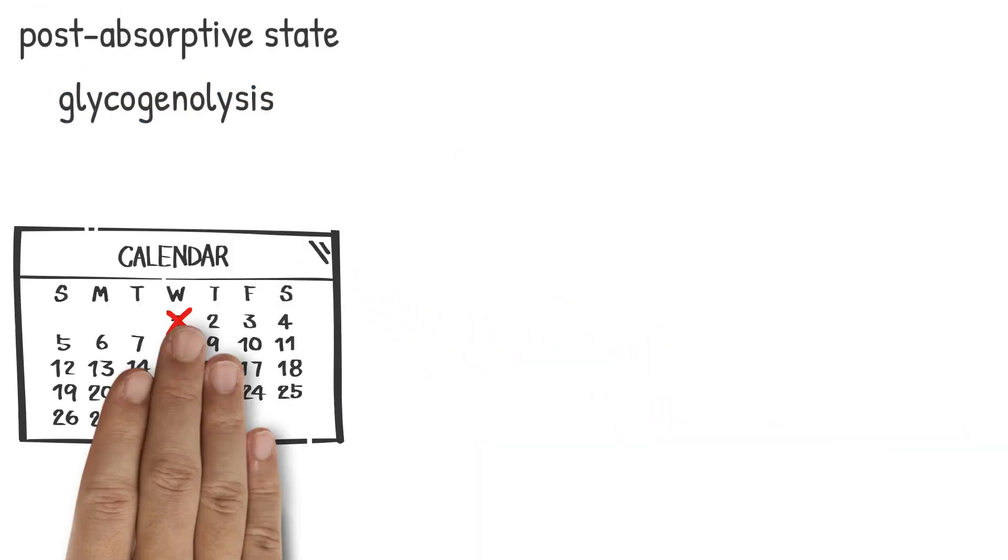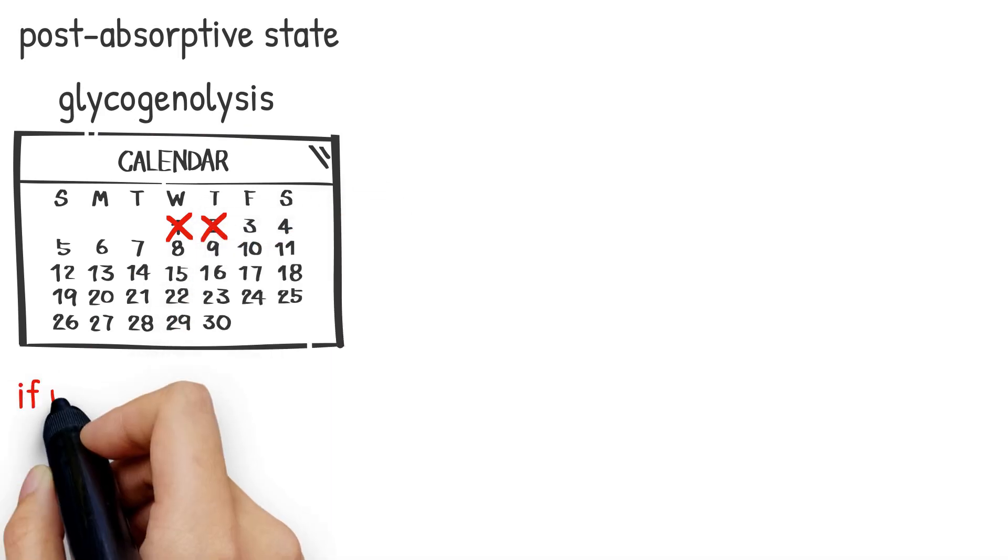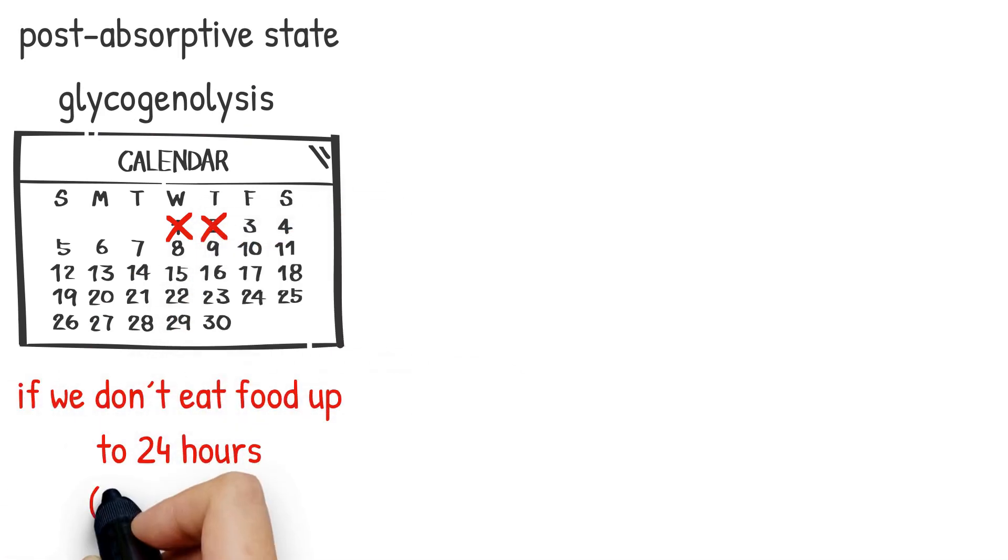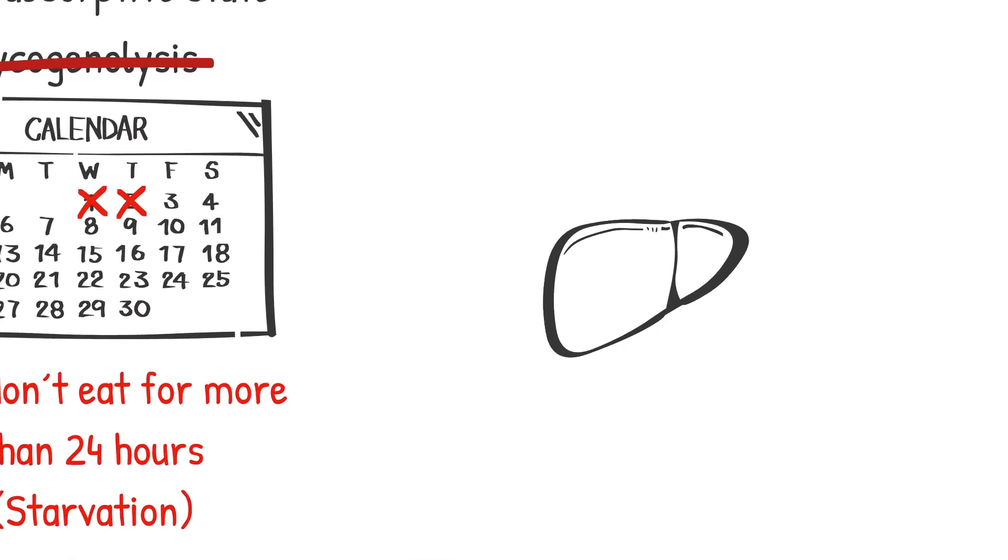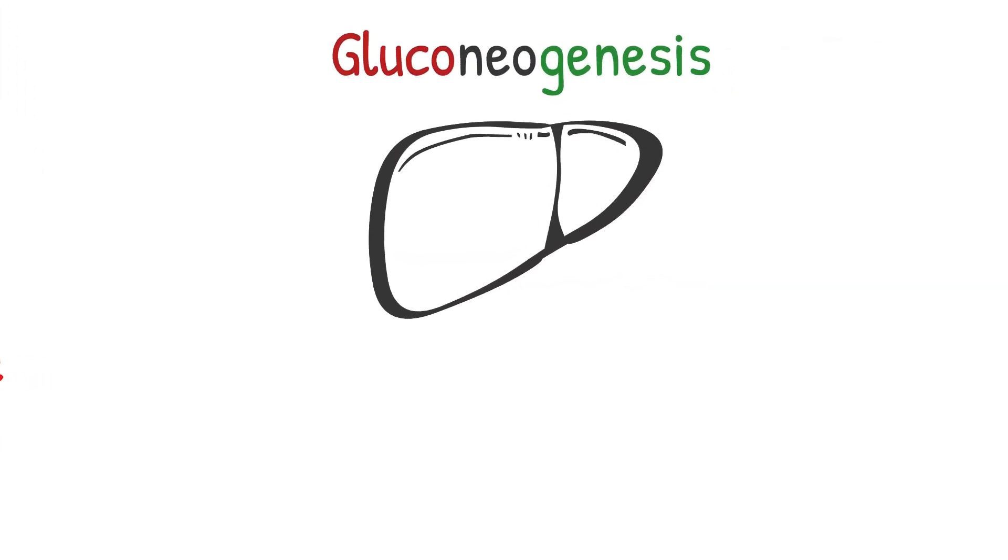In case of starvation, which means the post-absorptive state is elongated up to 24 hours, glycogen sources are diminished and glycogenolysis is not adequate for ATP production, and the liver starts the process of gluconeogenesis.